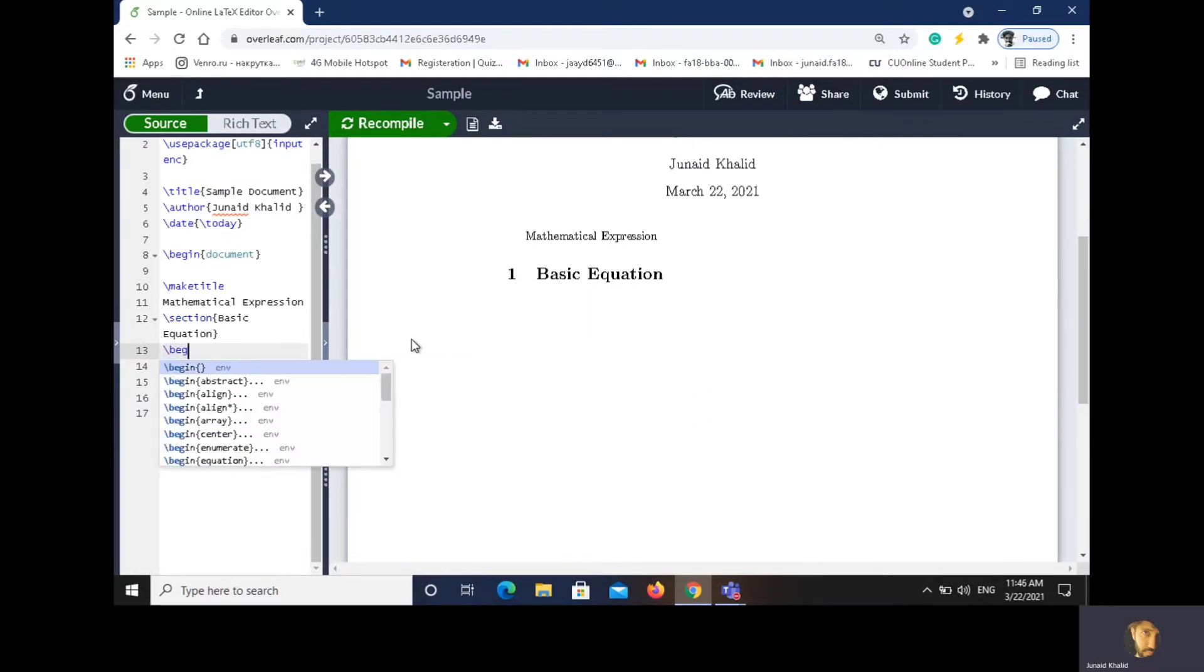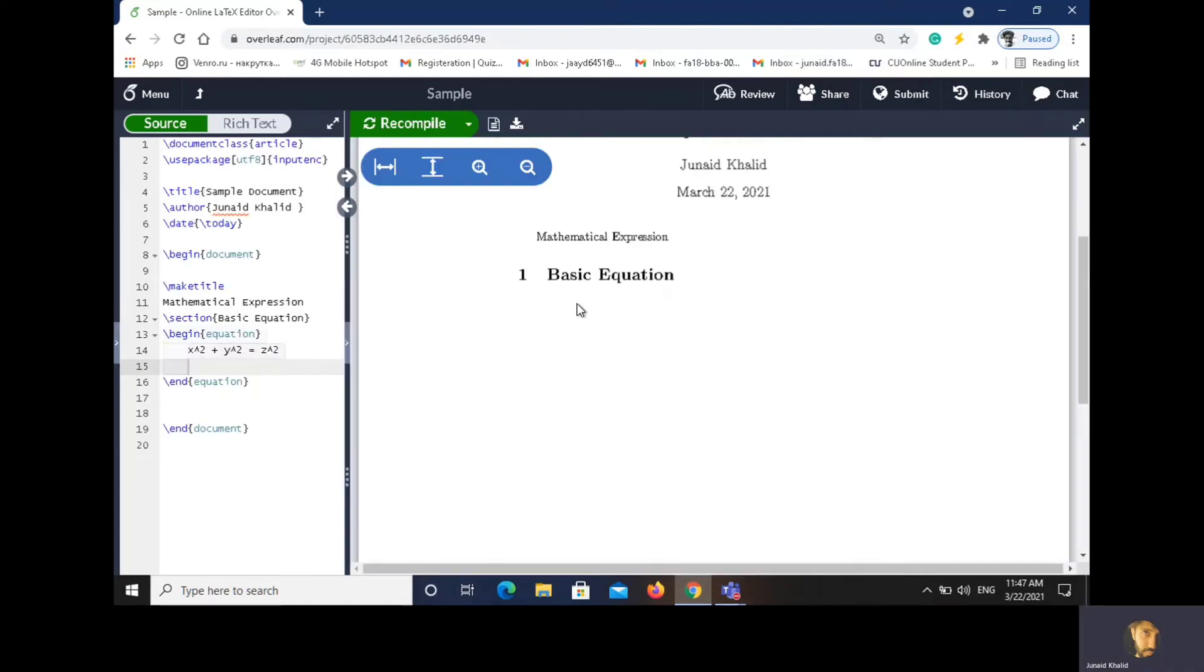Now we are going to write Pythagorean theorem. Begin equation, and we will write Pythagorean theorem: x squared plus y squared equals to z squared. And it will enter with end equation.